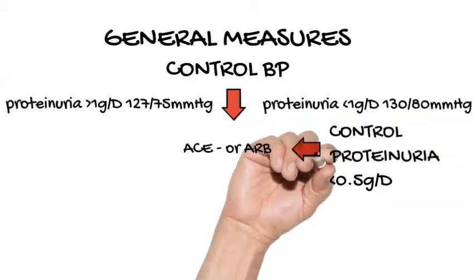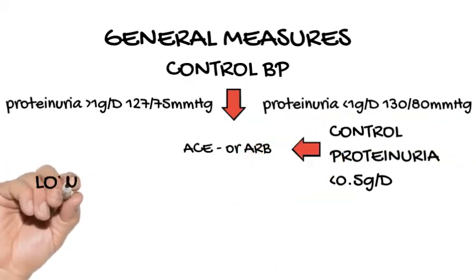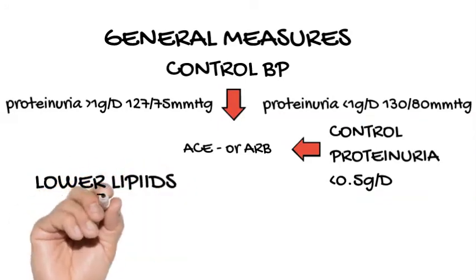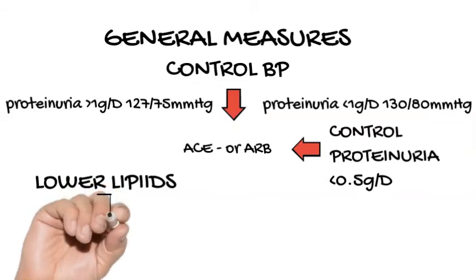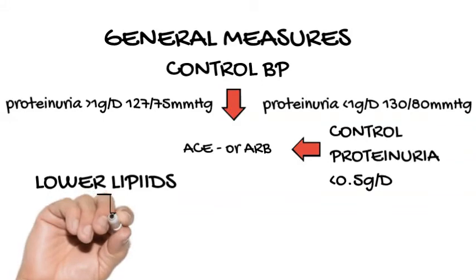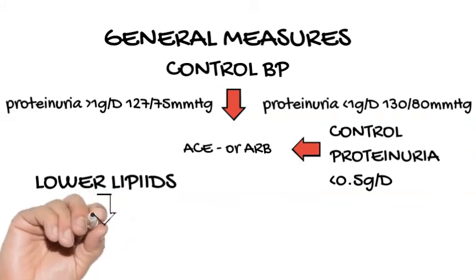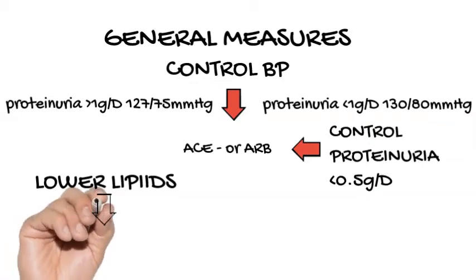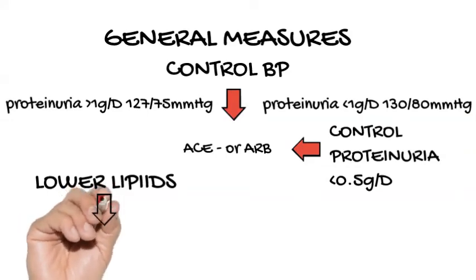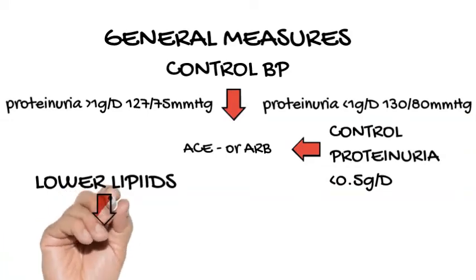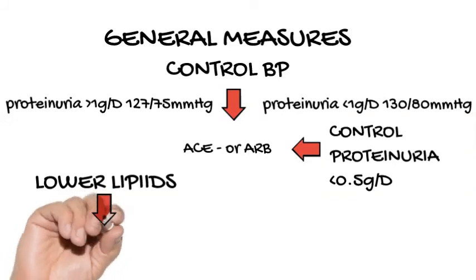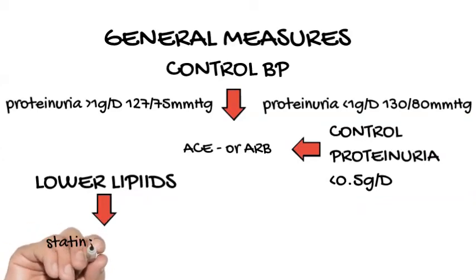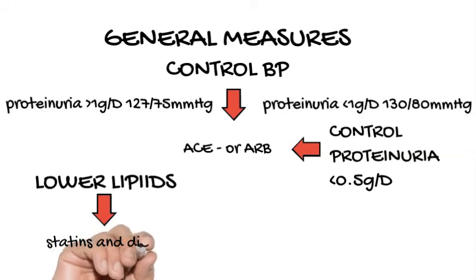Lipid-lowering therapy. Patients with GN and renal dysfunction are at high risk of dyslipidemia and atherosclerotic vascular disease. It has been estimated that patients with chronic kidney disease have a 10-year risk of coronary heart disease events greater than 20%. These patients should be treated with a cholesterol-reducing diet and statins. Treatment with statins can reduce their risk for progression of renal disease, as dyslipidemia is likely both a consequence and cause of renal dysfunction. Targets for LDL cholesterol with therapy in patients with GN and renal dysfunction should be less than 100 mg per deciliter.